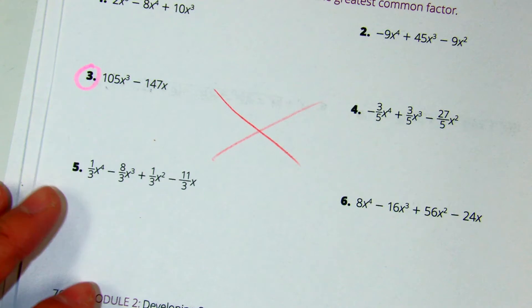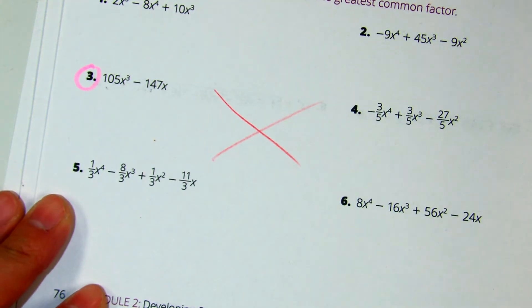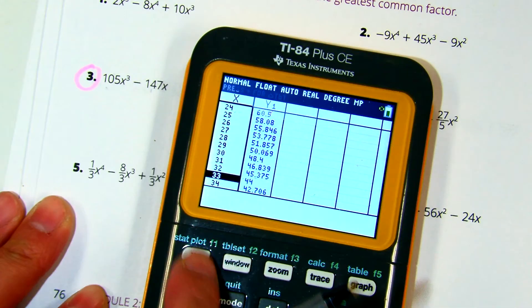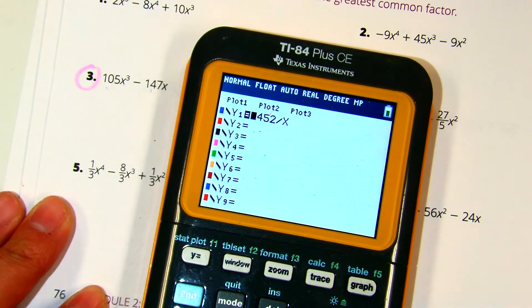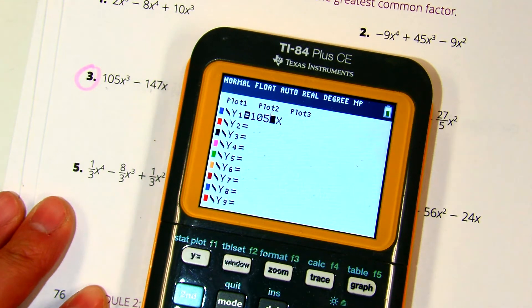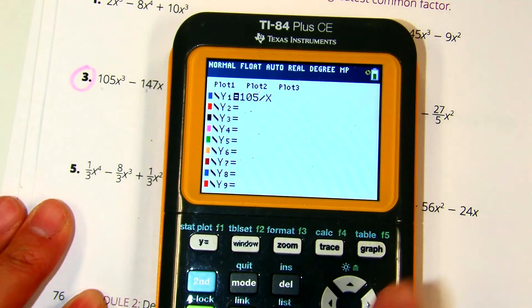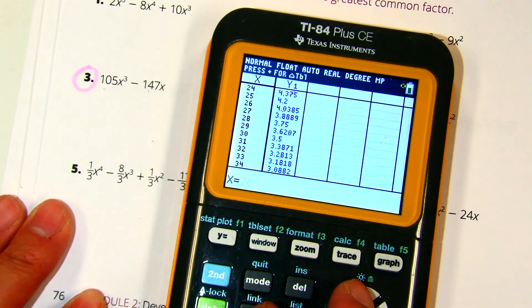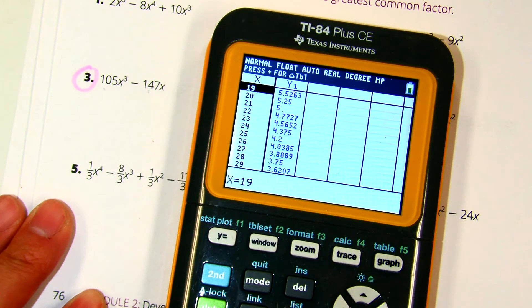I don't know it, so I'm going to use your calculator. I'll show you what I do. You can actually put into your tables 105 divided by x. And then I can look for all the numbers that are not decimals, and it will actually tell me all the whole numbers. So 21 times 5.